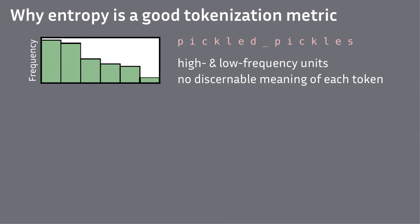That is not a good tokenization, because there is no specific meaning to each unit, but also it is heavily imbalanced. The letter A occurs much more frequently than the letter X. Because of this imbalance, the entropy of the distribution will be low, and this aligns perfectly with our intuition.